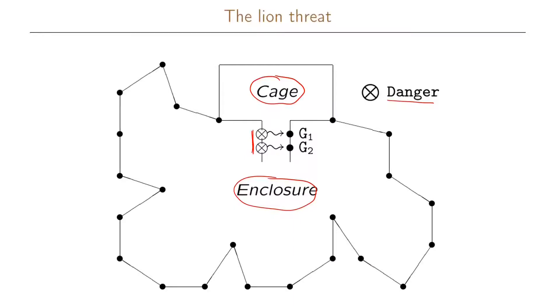We want to draw a state transition graph for this problem, and the first thing we need to figure out is how many states we need. We cannot have just two states as in the case for one lion. We need at least three states: one for both lions inside the cage, one for one inside and one outside, and one for both lions in the enclosure. So at least three states are needed.